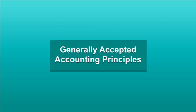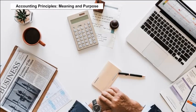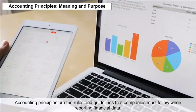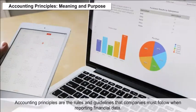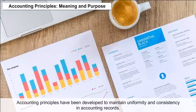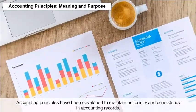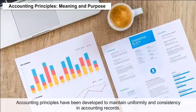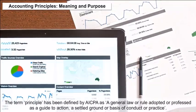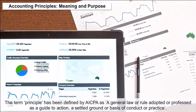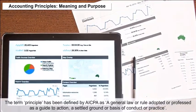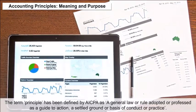Generally Accepted Accounting Principles — Accounting Principles, Meaning and Purpose: Accounting principles are the rules and guidelines that companies must follow when reporting financial data. They have been developed to maintain uniformity and consistency in accounting records. The term 'principle' has been defined by AICPA as a general law or rule adopted or professed as a guide to action — a settled ground or basis of conduct or practice.